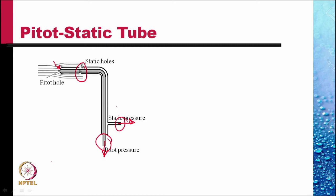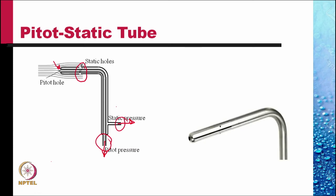Such pitot-static tubes are used routinely in laboratory experiments. In a commercial pitot-static tube, the pitot hole is right at the front, and the static holes are located about 10 diameters behind the tip of the tube. It is assumed that within 10 diameters the disturbance caused by the introduction of the tube will die out, and the static pressure there is the same as the static pressure if the tube were not inserted into the flow.